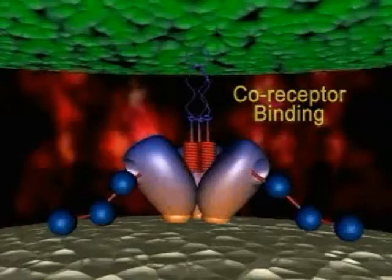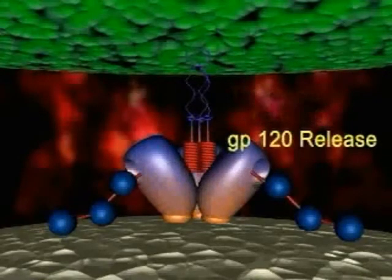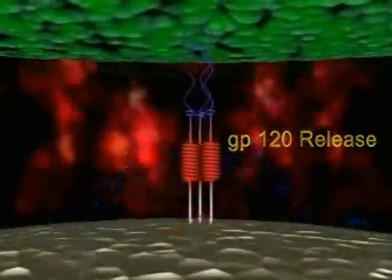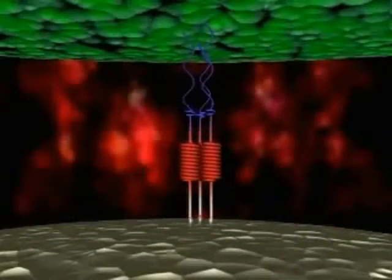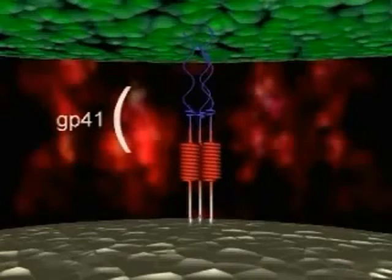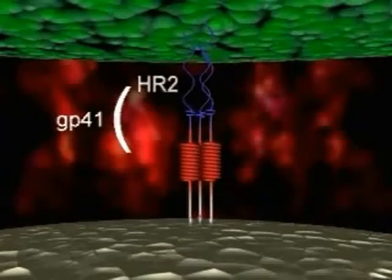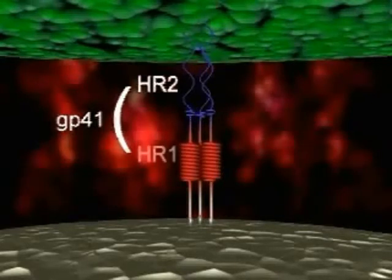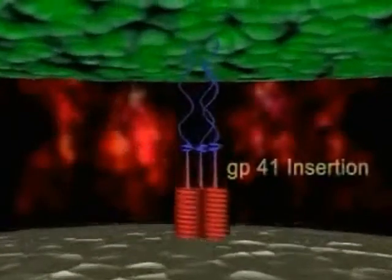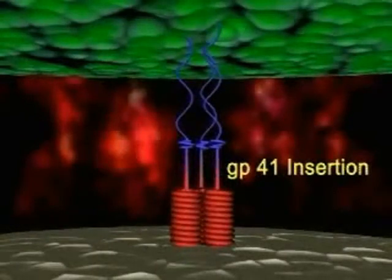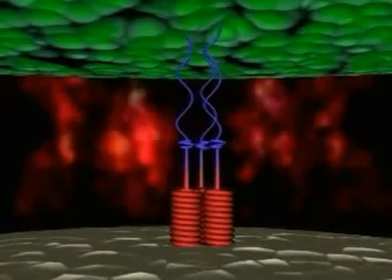These changes allow GP120 to move aside, exposing GP41. The third and final step preceding HIV cell entry is called fusion and is mediated by GP41. GP41 contains two heptad repeat domains, HR2 and HR1. Current models suggest that as GP41 is released from GP120, the hydrophobic terminus of GP41 embeds itself in the cell membrane.